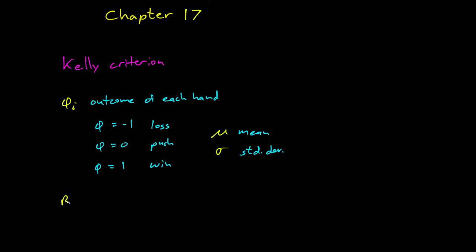Now we have a starting bankroll B₀, this will be our initial bankroll. And in the Kelly Criterion, we assume that we bet a constant fraction of our bankroll at every hand. So we'll call that f, the fraction to bet each time.